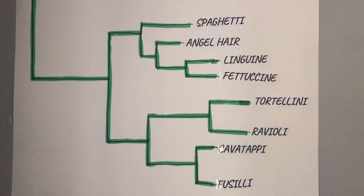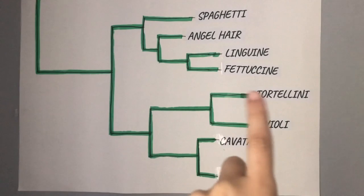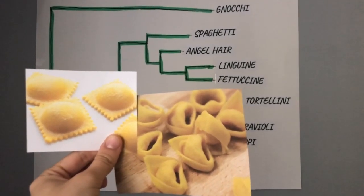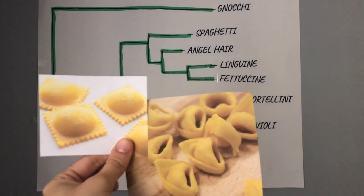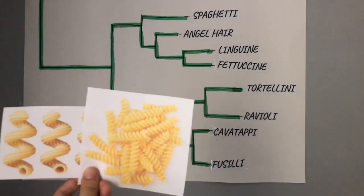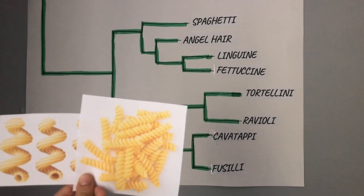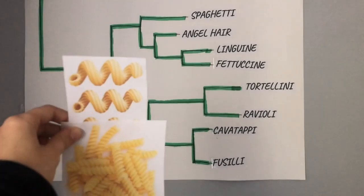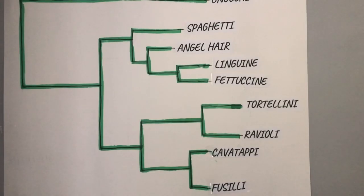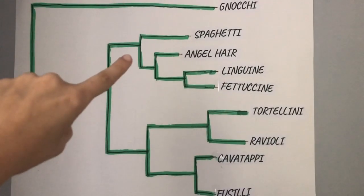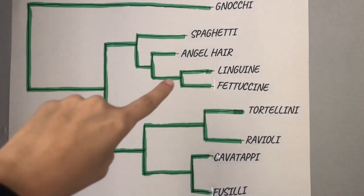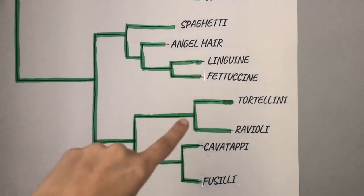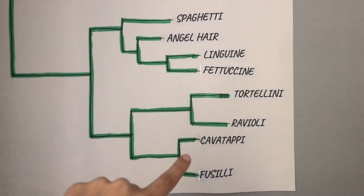Going to the shorter pasta side, we see a divergence of stuffed pasta and twirly pasta. It took longer to evolve into these stuffed shapes, maybe because there are so many delicious things they can be stuffed with. For cavatappi and fusilli, the common ancestor must have gained a twisting gene because both types of pasta twist in some shape or form. So going at each node, we just have the long spaghetti, then it gets thin, then it flattens out. Or we have medium sized pasta, it gets stuffed, or it twists.